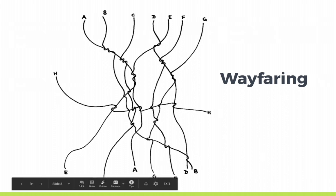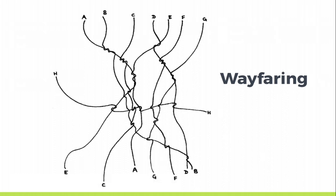Ingold describes wayfaring evocatively, citing the Inuit as an example: as soon as a person moves, he becomes a line. You lay one set of tracks looking for other tracks that may lead you to your quarry.